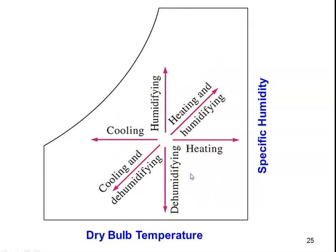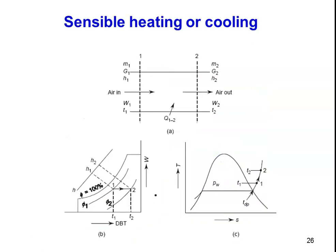First we take the sensible heating or cooling process. We consider a duct where the air is flowing. At the inlet we have M1 (mass of water vapor), G1 (mass of air), H1 (enthalpy of the air and water vapor mixture), W1 (specific humidity), and T1 (temperature). There is some heat addition resulting in changed properties at the outlet: M2, G2, H2, W2, and T2.